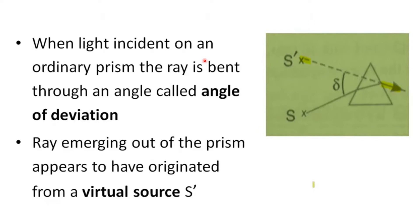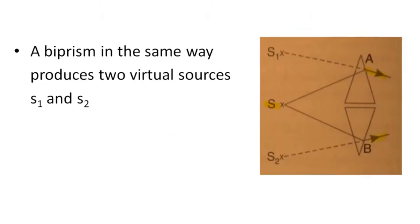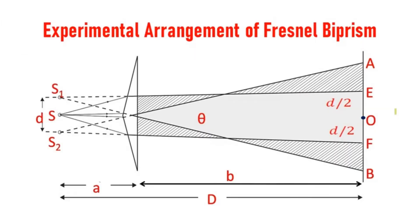The ray is bent through an angle called the angle of deviation, and the ray emerging out of the prism appears to have originated from a virtual source S'. A biprism produces two virtual sources S1 and S2. The light refracts from the upper prism producing virtual source S1, and from the lower prism producing virtual source S2. So S1 and S2 are the virtual sources produced from the monochromatic source S.